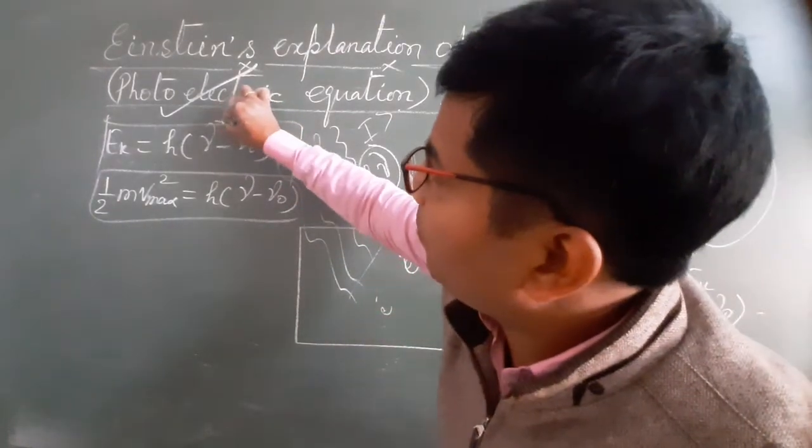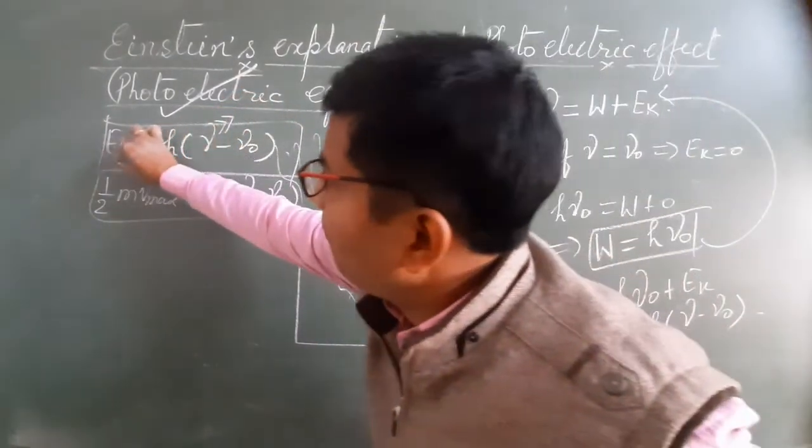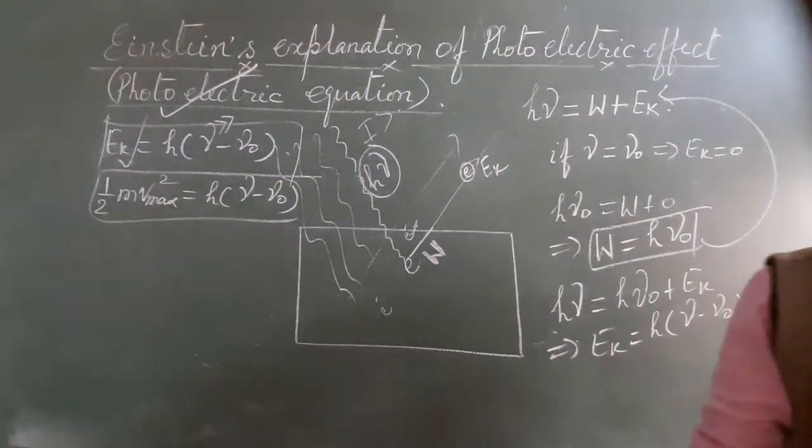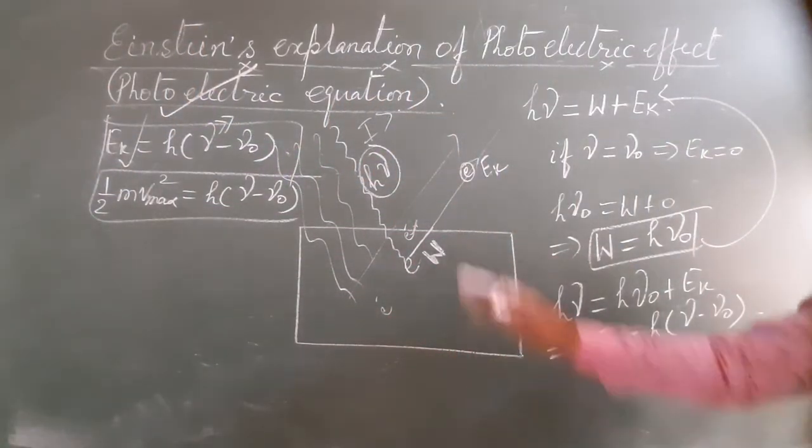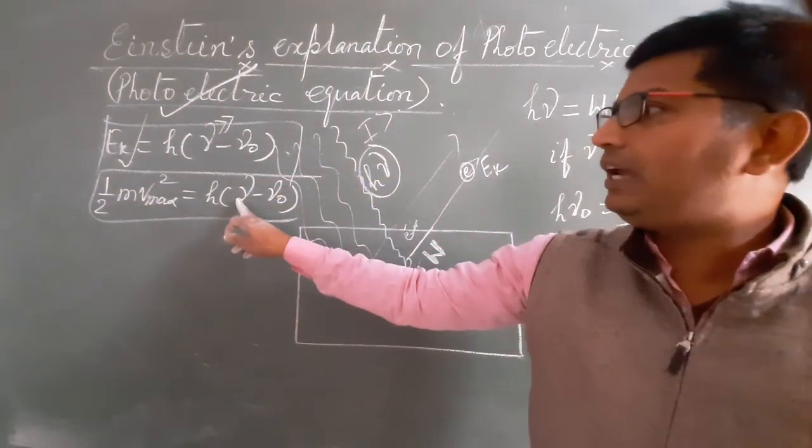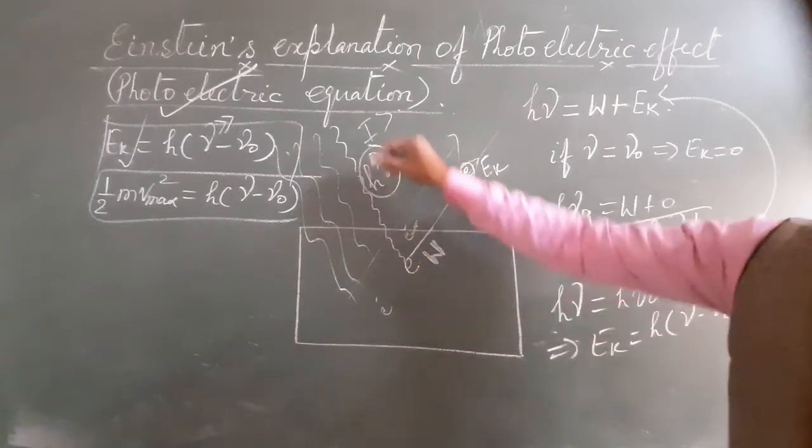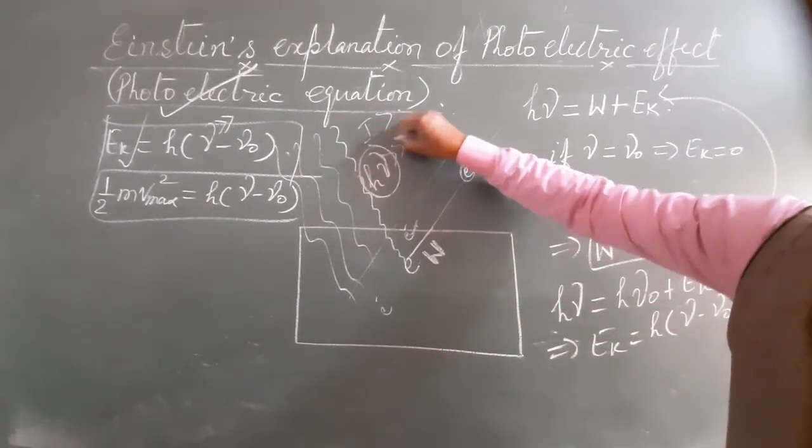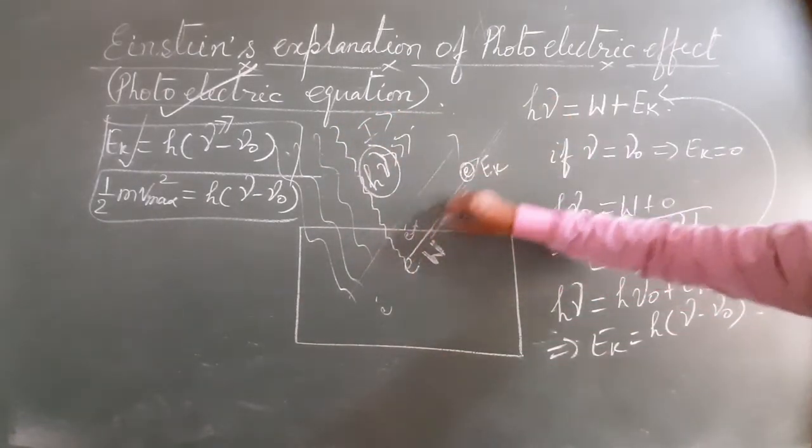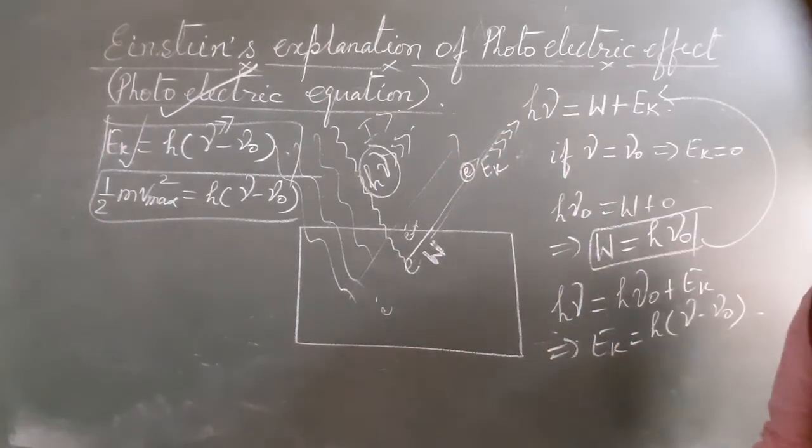With increase in the frequency of incident light, the maximum kinetic energy of emitted photoelectron increases. If the value of nu increases, then maximum kinetic energy will also increase. The greater the energy of light photon, the greater the kinetic energy of emitted electron.